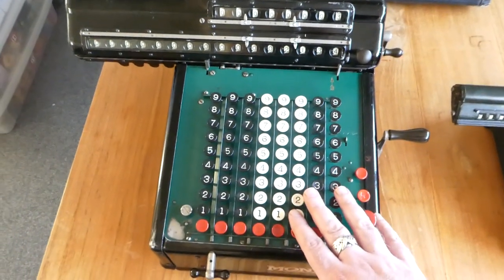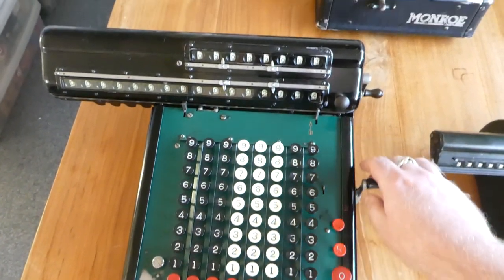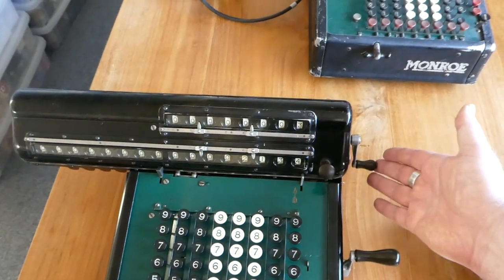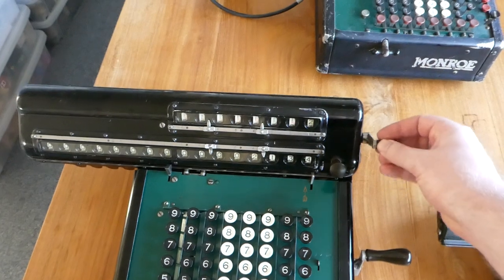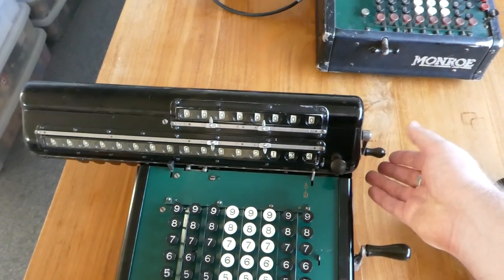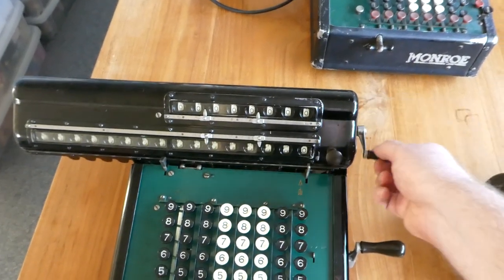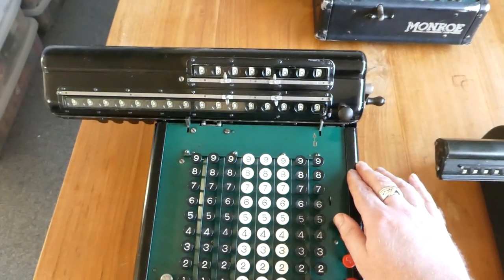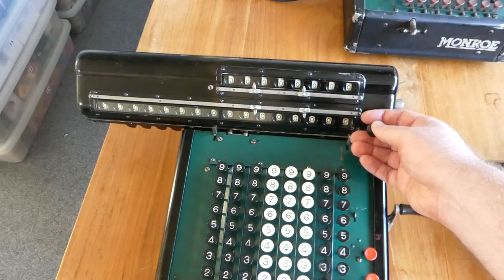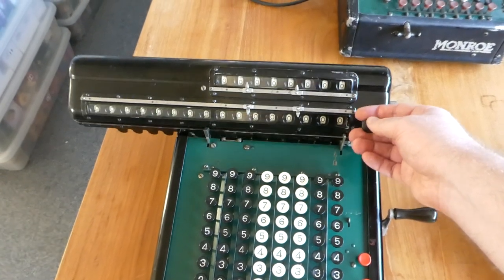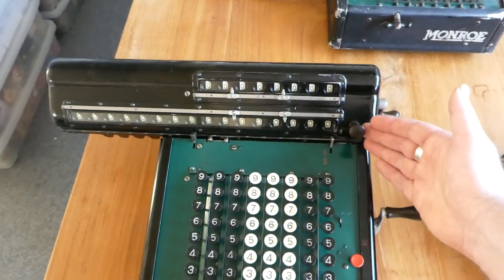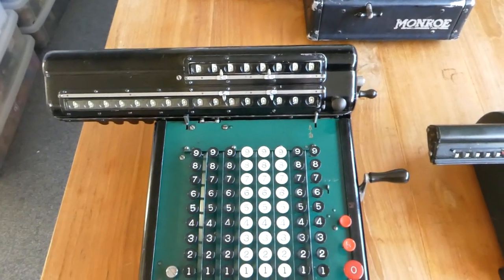If you want to clear the register or the counter, you only have one lever. If you turn it forwards, you clear the counter. If you turn it backwards, you clear the register. Notice that the register, the whole carriage lifted up when I cleared it, so that it disengages from the rest of the mechanism.